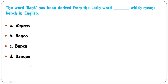The word 'bank' has been derived from which Latin word that means 'bench' in English — bankers, banco, banker, or bank? The correct answer is A, 'bankers', which is the Latin word. Banco and banker are Italian words, and 'bank' is the French word. So the Latin root word is 'bankers', from which the English word 'bank' is derived.